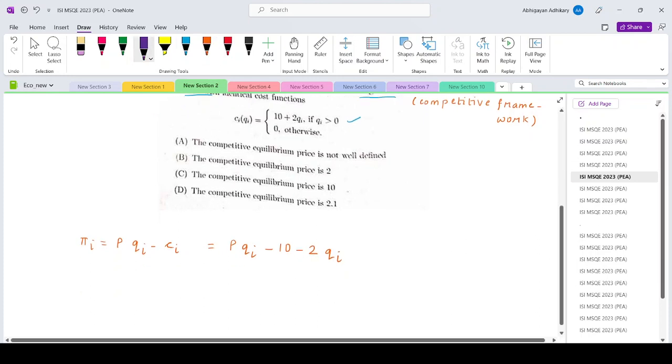So the form will try to maximize profit given the price level by choosing quantity. So ∂π_i/∂q_i equals 0. That will basically give you p minus 2 equals 0.